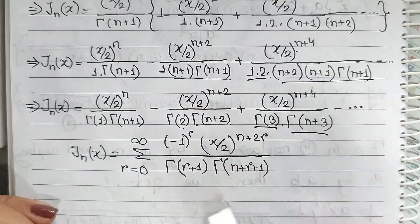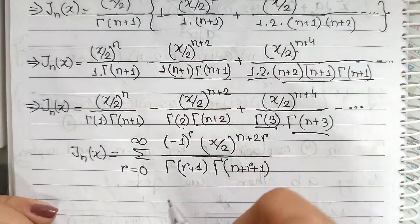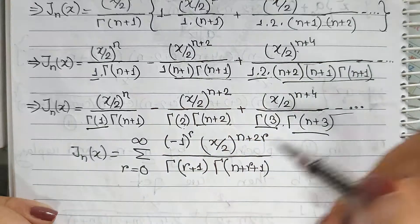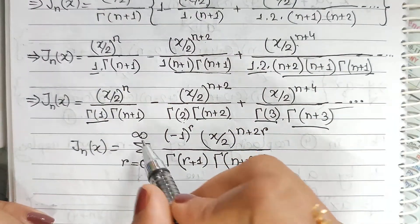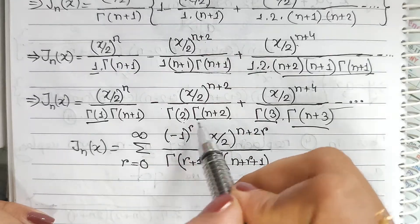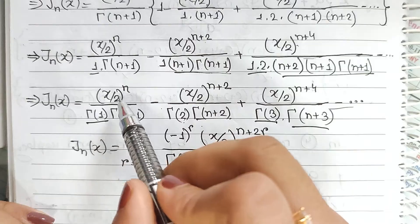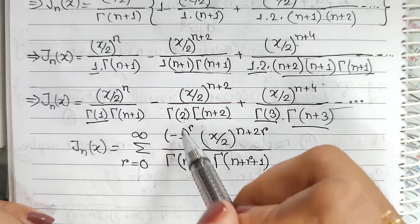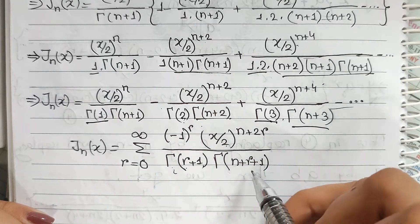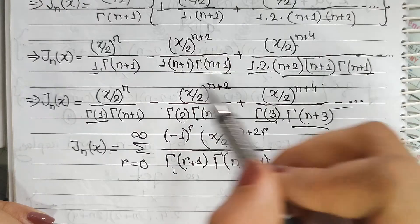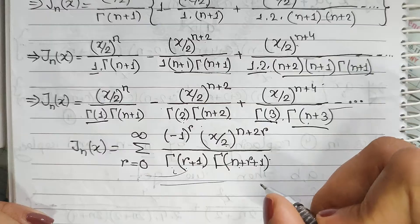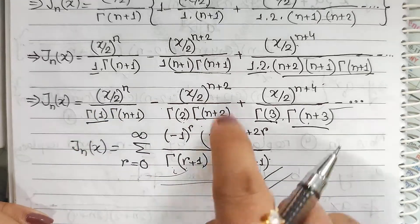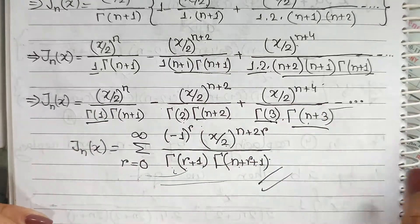So this is gamma(3) and gamma(n+3). This is the gamma function from first year calculus. 1 is gamma(1) and n plus 1 is n plus 1. This is the series equal to 0: plus minus plus minus, which is (-1)^r. This is (x/2) to the power n plus 2 and n plus 4. This is n plus 2. Now you can see the alternating sign. So r plus 1 means n plus 2, giving Jₙ(x). We use the r term: plus r and 1 plus 2 and r and 3 plus 2.